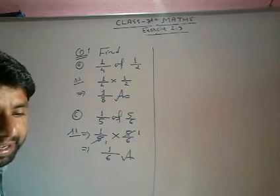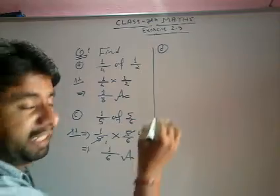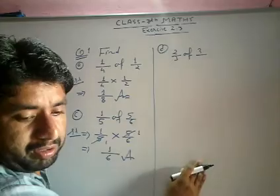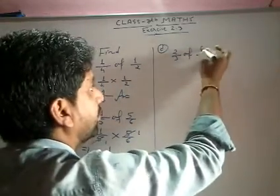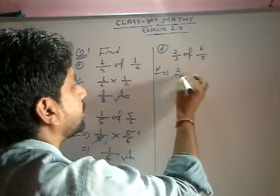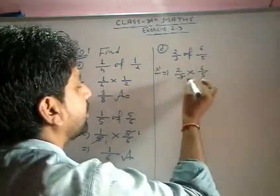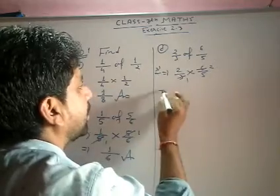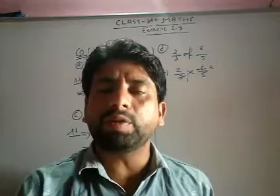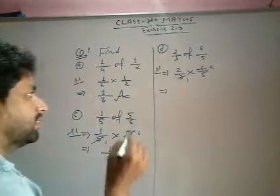Similar, all try. We have D: 2 upon 3 of 6 upon 5.